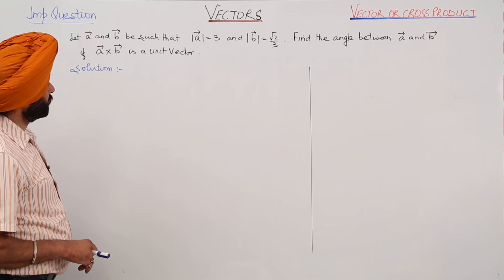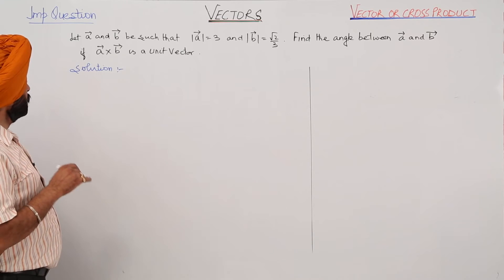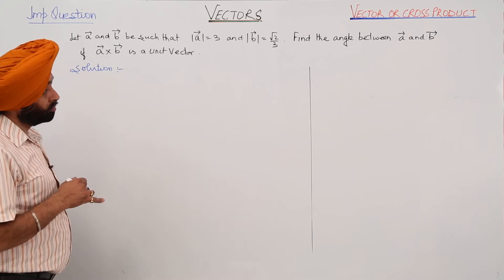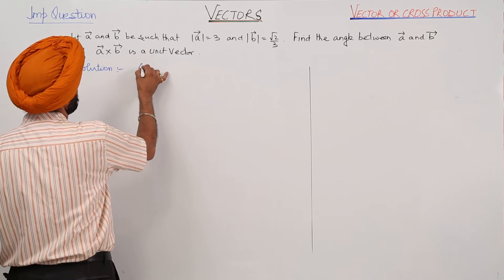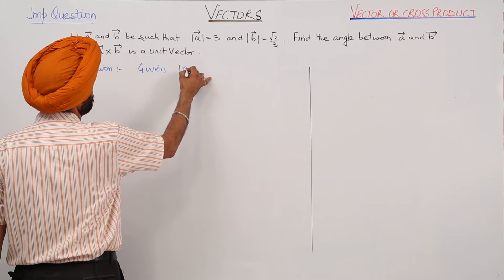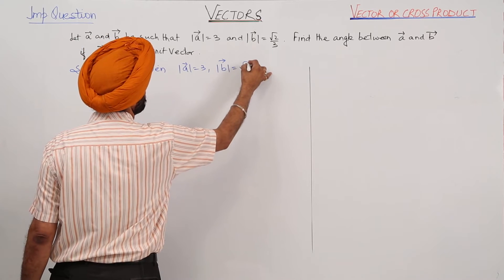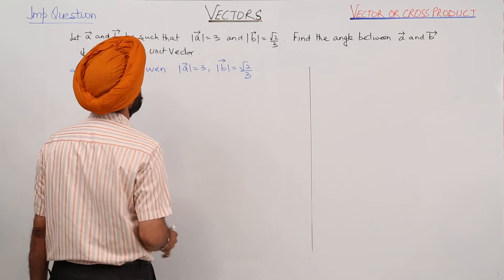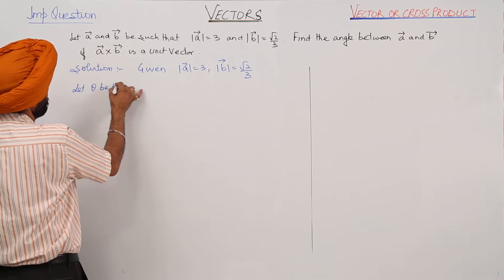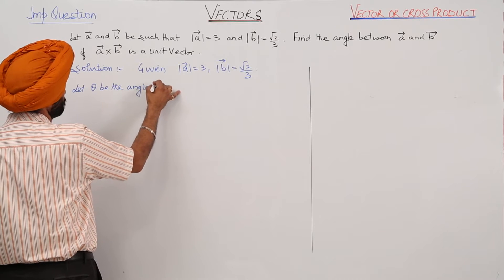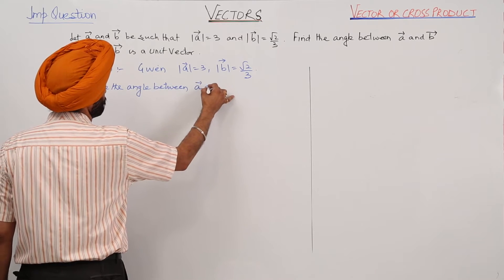In this question, the magnitude of vector A and magnitude of vector B is given, and we have to find the angle between vector A and vector B. The condition given is that the cross product of the vectors is a unit vector. Given: magnitude of vector A is equal to 3, and magnitude of vector B is equal to square root of 2 upon 3. Let theta be the angle between vector A and vector B.